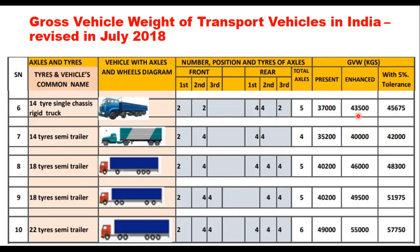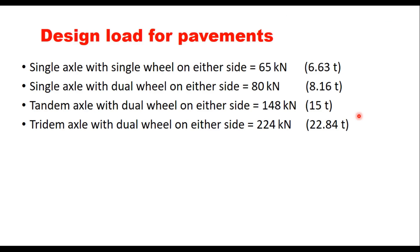We should remember that all these weights are only for the purpose of charging the fee for overloading. Pavements in India are still designed for a single axle and single wheel load on either side for a weight of 6.63 tons. The standard axle load for a dual wheel assembly is 8.16 tons. For a tandem axle with dual wheel on either side, it is 15 tons. For a tridem axle with dual wheel on either side, it is 22.84 tons.